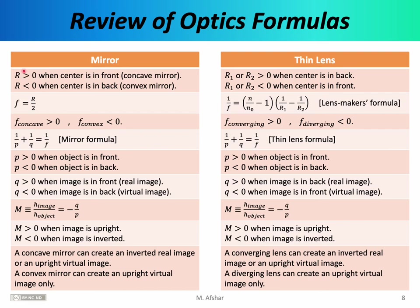For mirrors, the radius is considered positive when the center is in the front, and negative when the center is in the back. For thin lenses, the radius is considered positive when the center is in the back, but negative when the center is in the front. When I talk about the front and back of an optical element, I mean the initial and final position of the rays. The side where light starts before reflecting or refracting is the front, and the opposite side is the back.